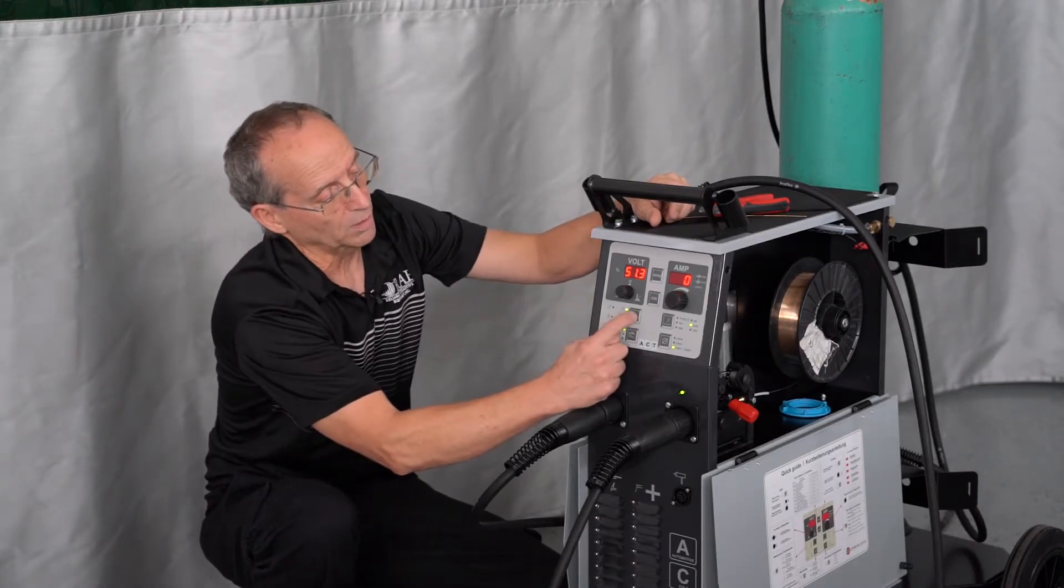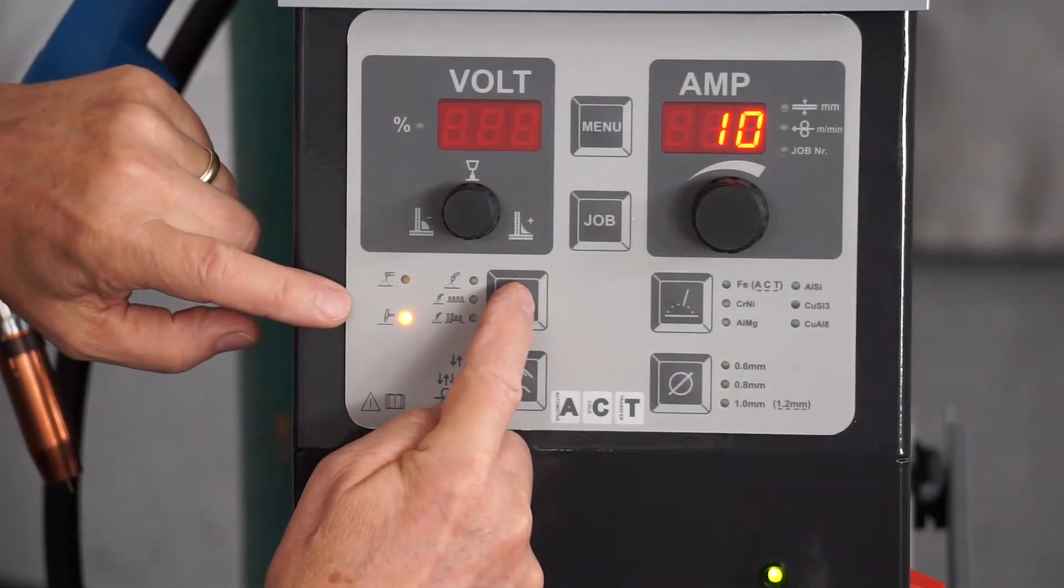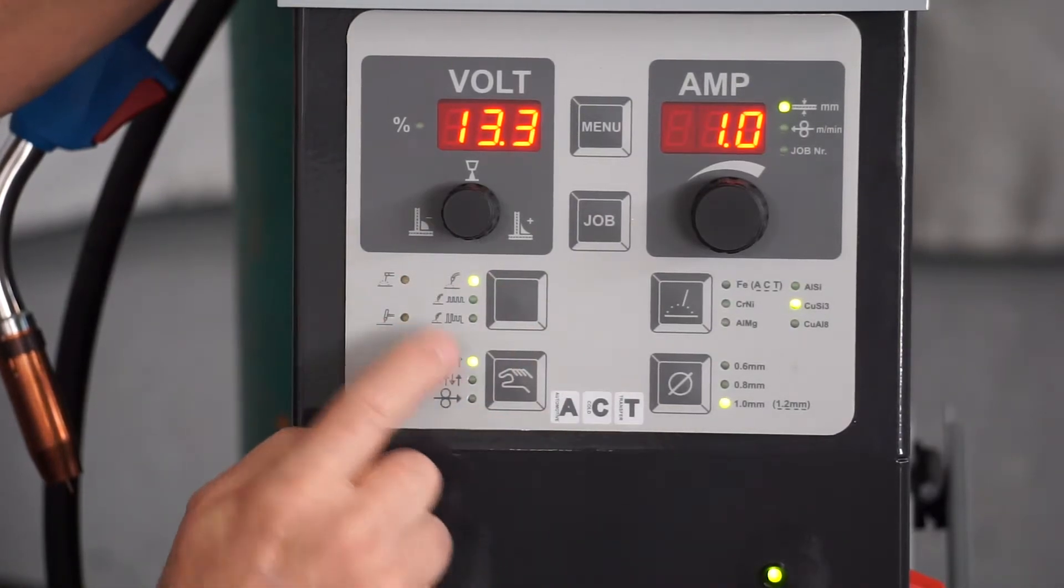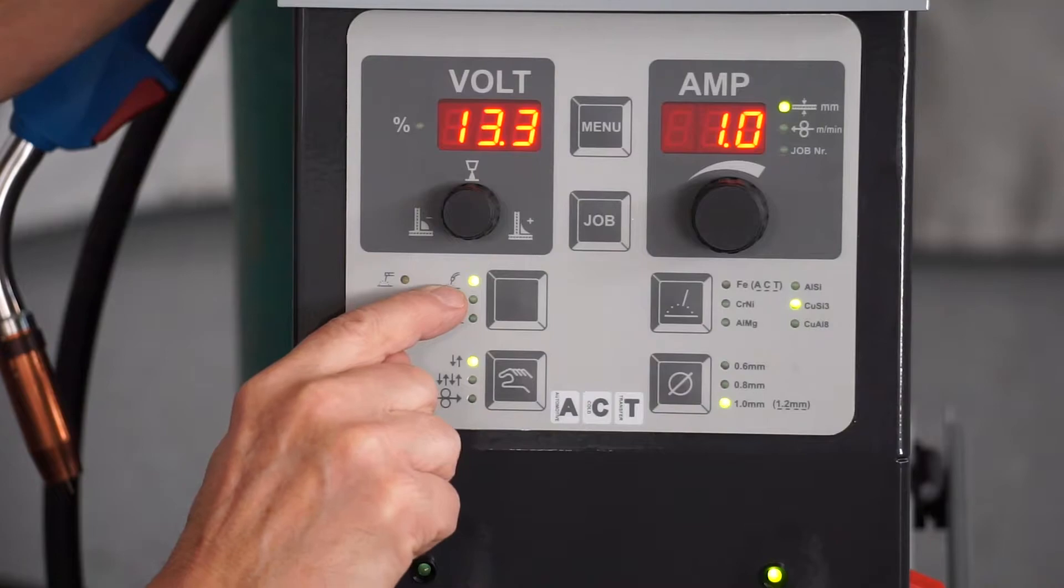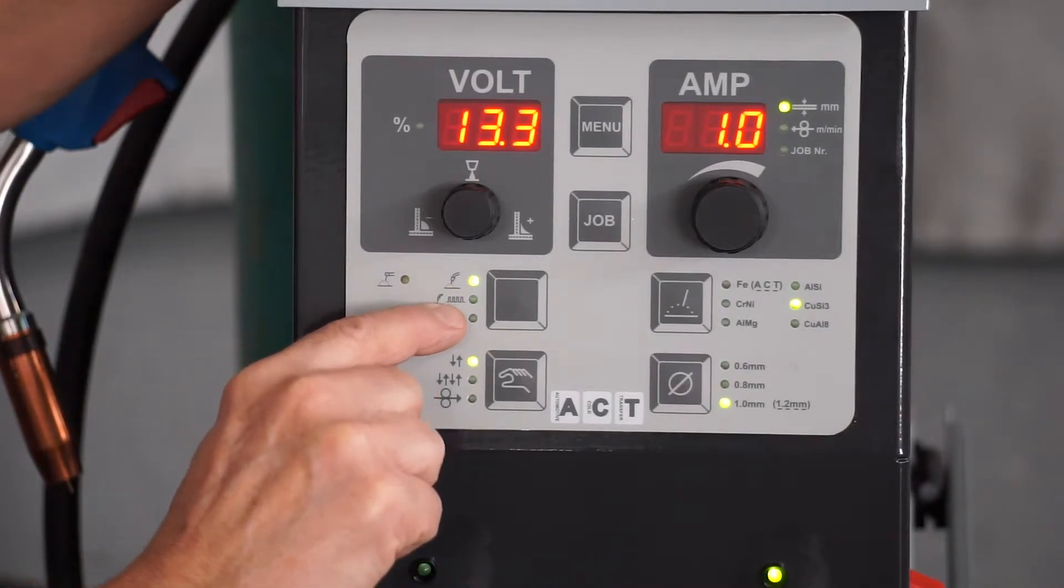So just a quick push of the button. We'll change each one of these around. It'll cycle through these other items also. So if we're on MIG brazing right now, MIG brazing will work off of a standard gun or a pulse, depending on the manufacturer, what they require on that.